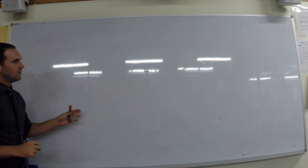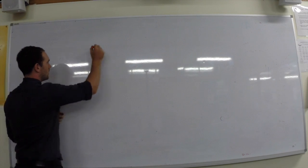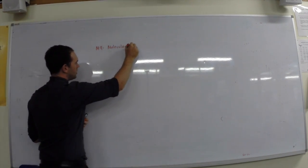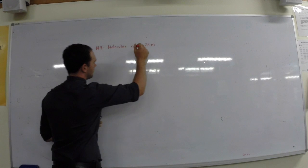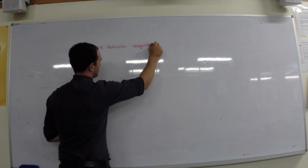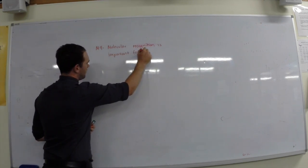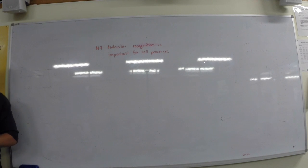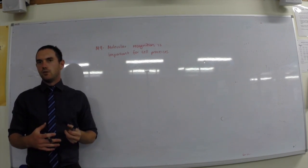Alright, we're now going on to M9, which is all about molecular recognition. I'll state something like molecular recognition is important for cell processes. Basically it just goes on from the theme that we've been looking at, how important three-dimensional proteins, three-dimensional molecules are.